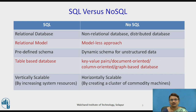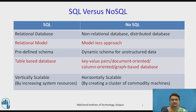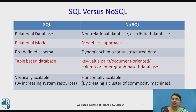In NoSQL there is a variety of formats. It supports unstructured data, so it may use key-value pairs for storing data, or document-based storage, column-oriented, or graph-based database. SQL is vertically scalable because as the system resources are incremented, it is scaling.